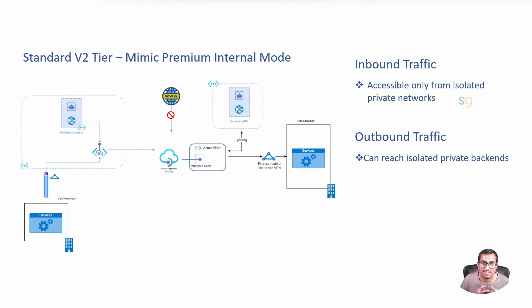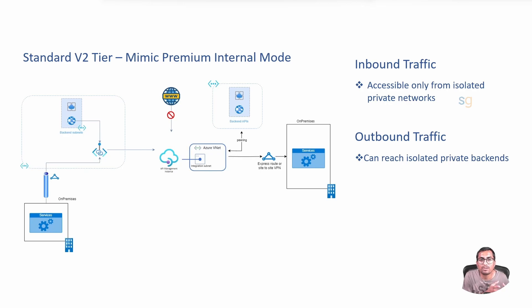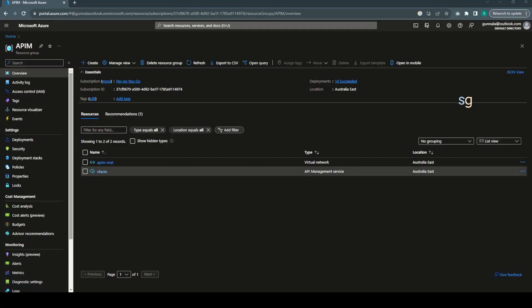By default, the APIM gateway in Standard V2 is publicly accessible, but in internal mode we need this to be restricted to a trusted network. You can simply establish a private endpoint for the APIM gateway. This endpoint is then placed within a VNet, effectively ensuring that only traffic originating from that specific VNet can access the APIM gateway. Let's quickly look at the demo.